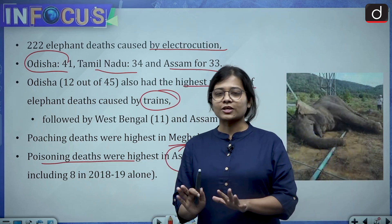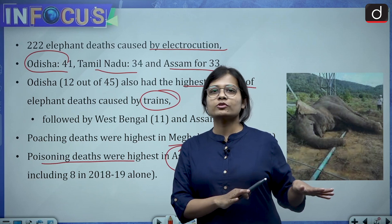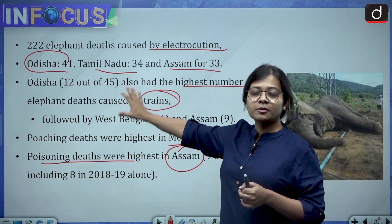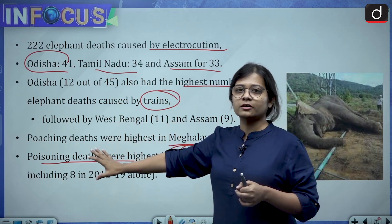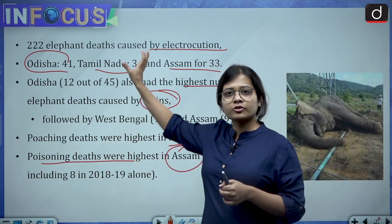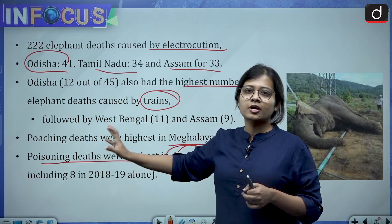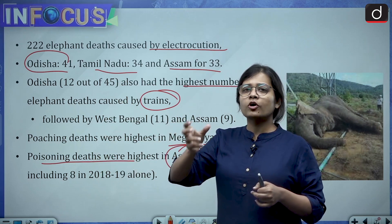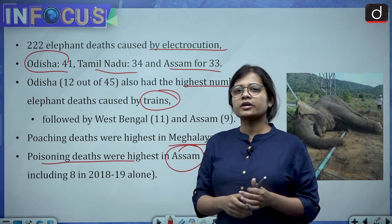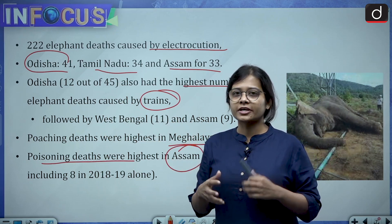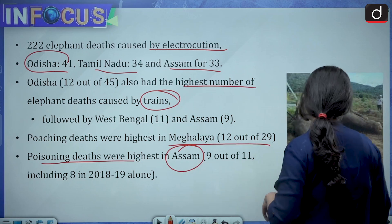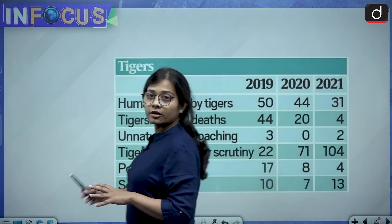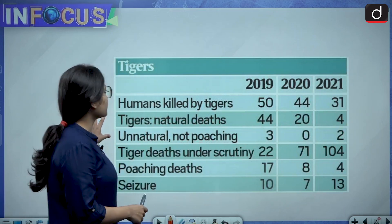This is getting a little factual, but don't worry — I will come to the conceptual part also. These are the data presented in the Lok Sabha, so you do not have to remember every single digit, but the trends and overall figures will really help you in writing good answers if a question comes regarding human-animal conflict.